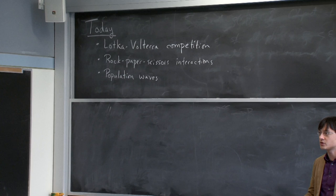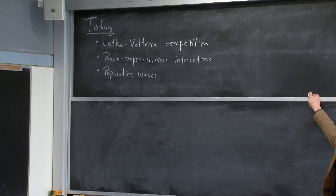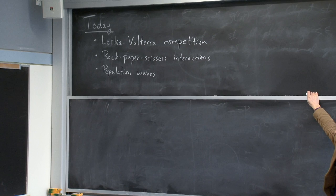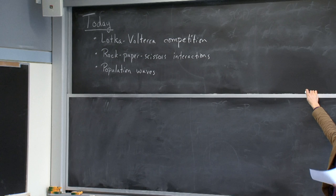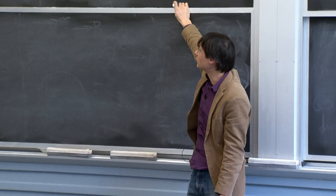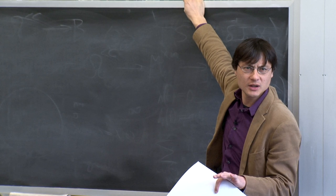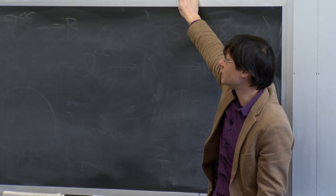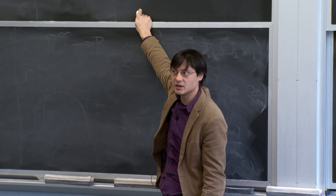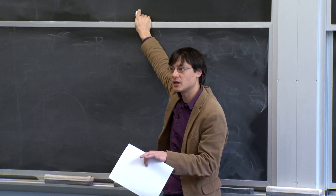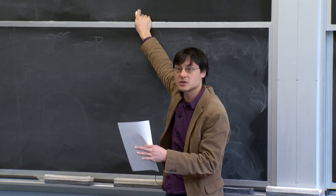We'll talk about a demonstration of rock-paper-scissors type interactions in the context of male mating strategies in lizards—the paper by Sinervo and Lively. Then we'll talk about another paper in the microbial realm showing rock-paper-scissors type interactions in the context of colicin production, i.e., toxin production in bacteria. At the end, we'll talk about population waves—the basic idea of what happens if you combine some growth process with effective diffusion, and you can get population waves corresponding to range expansion where a population expands into new territory.